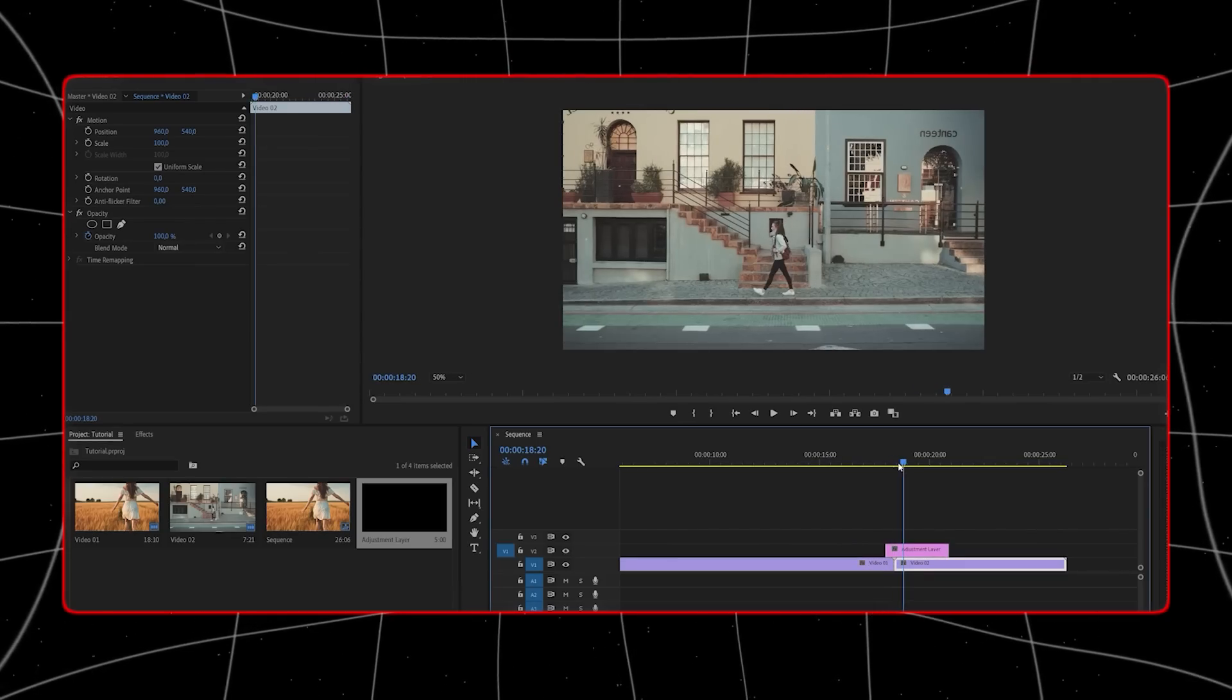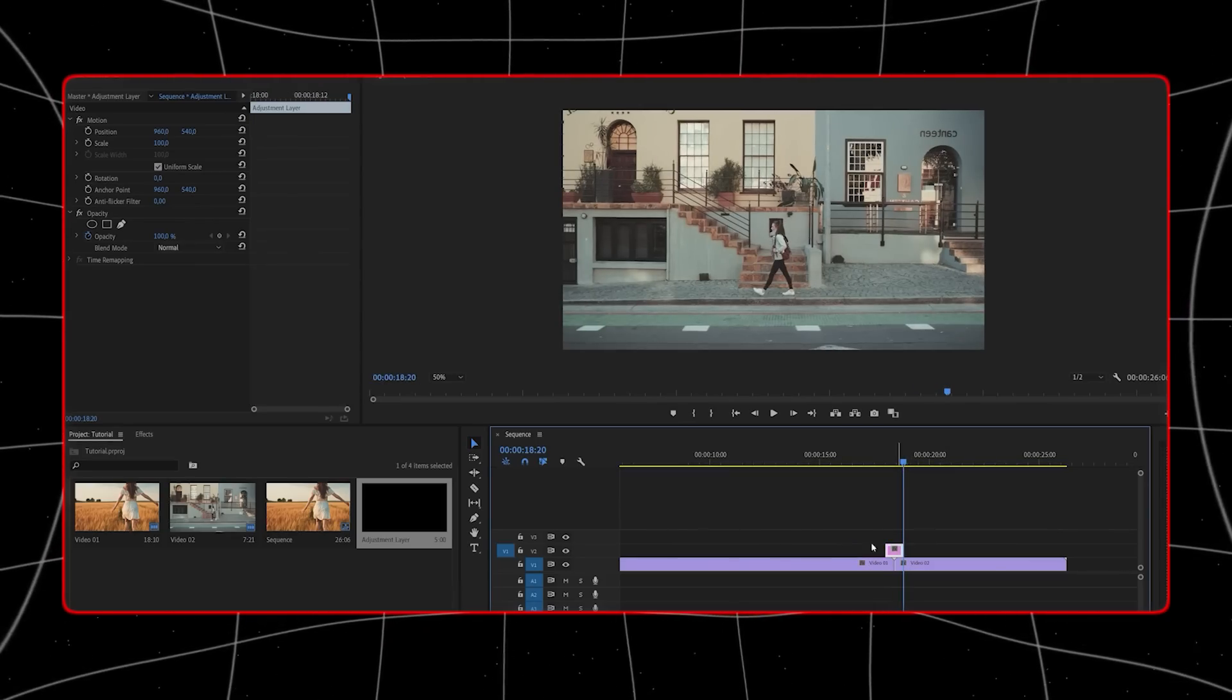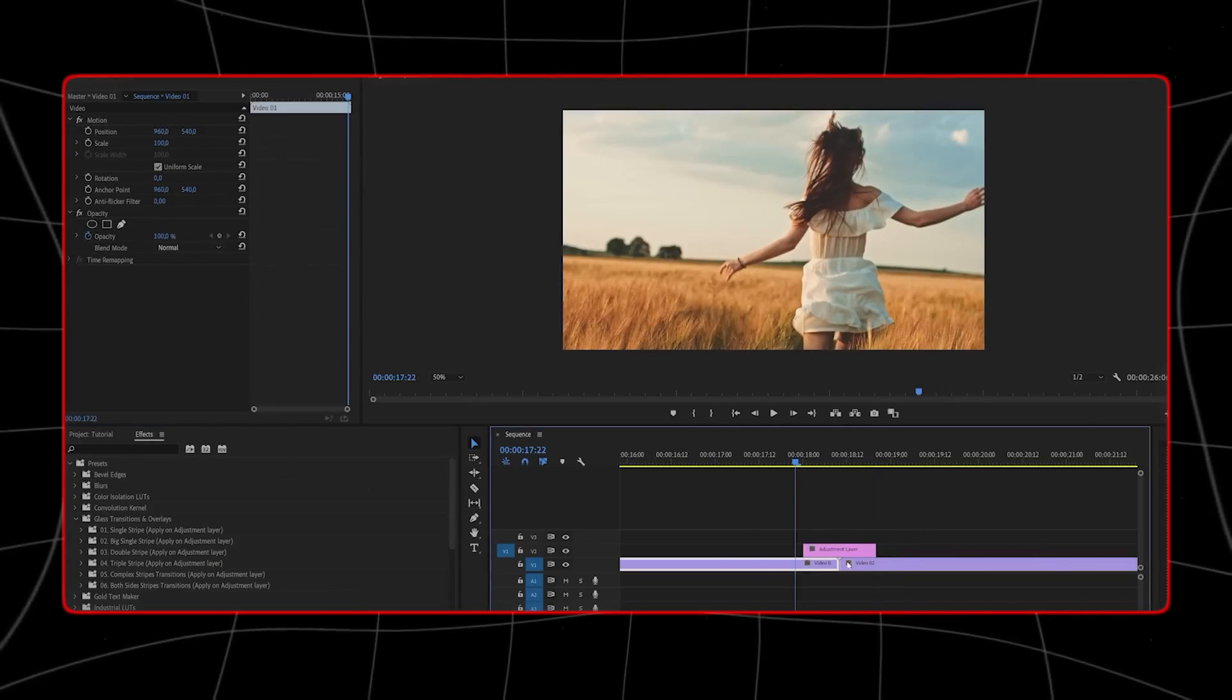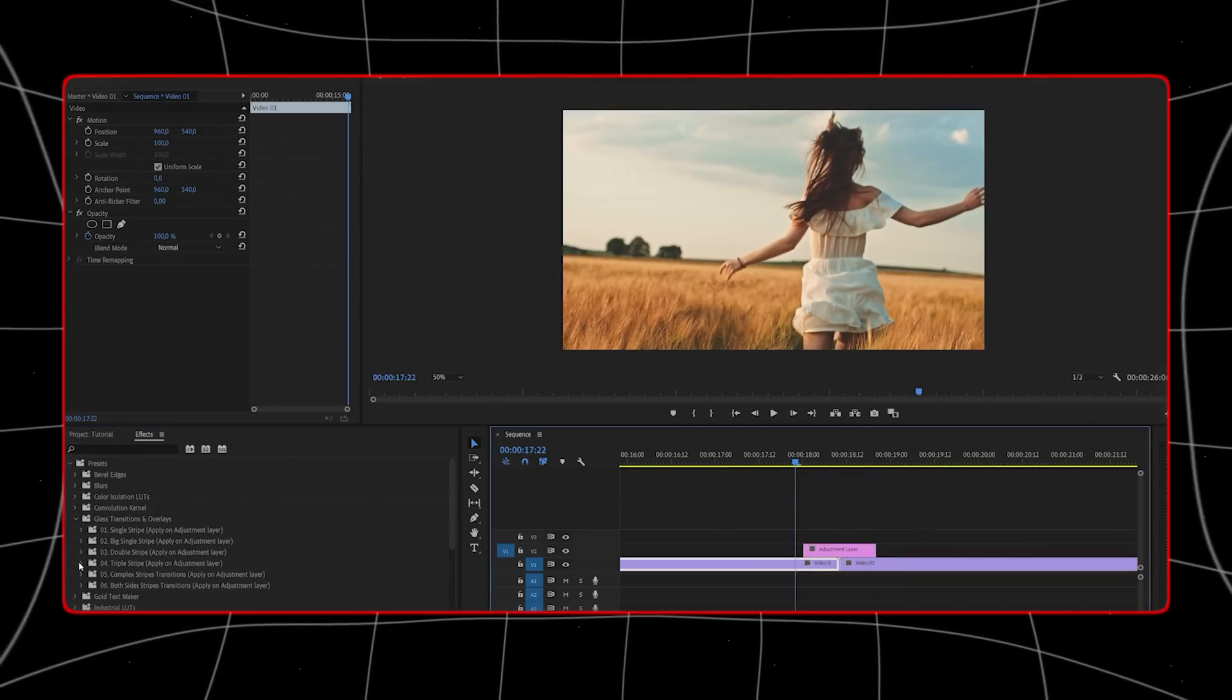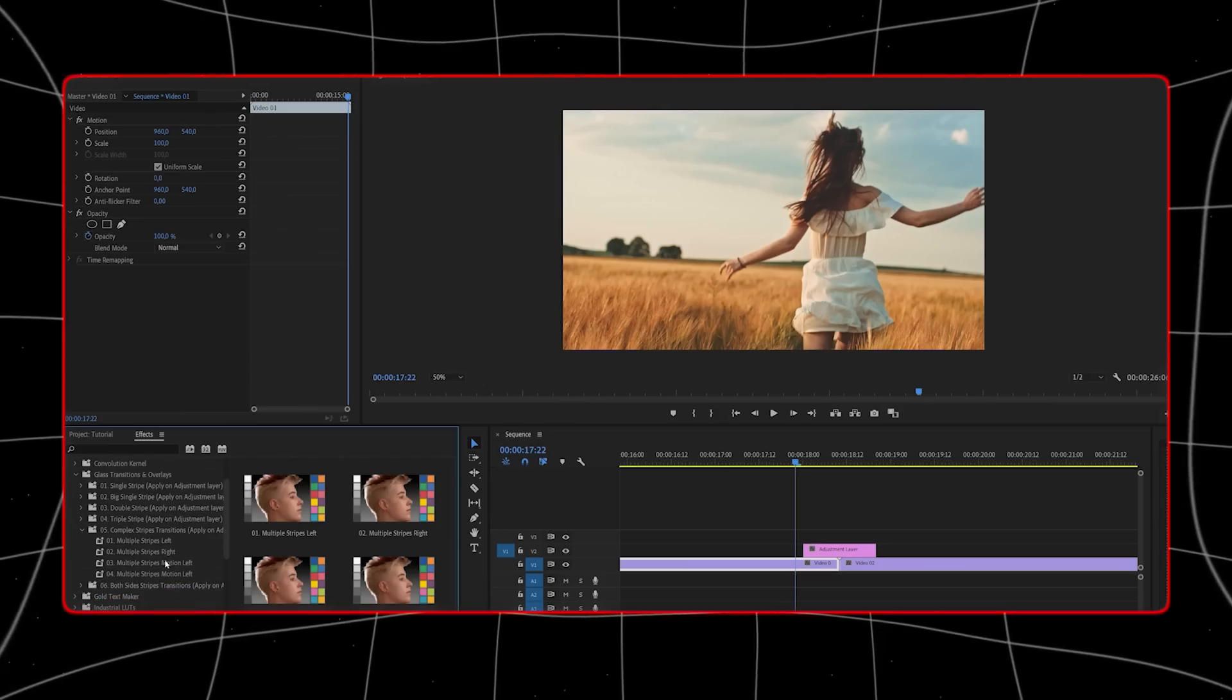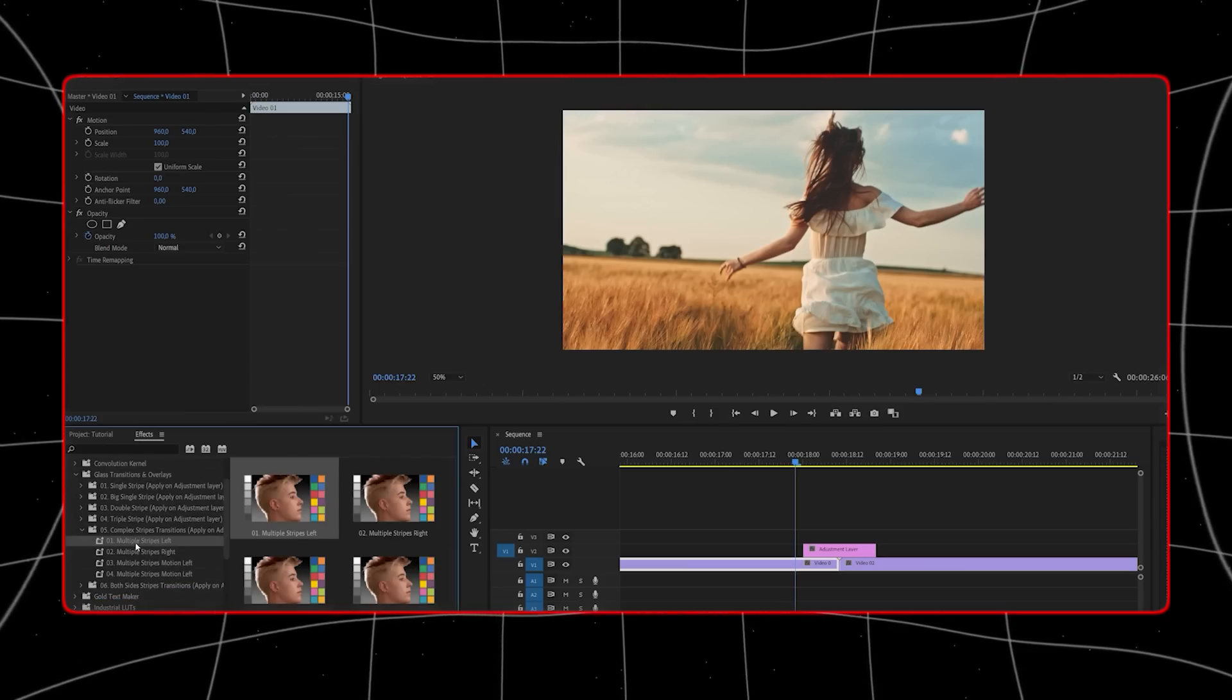With 4M, users could simply give natural language instructions to generate and edit video content. For example, a user might say, create a highlight reel for my vacation videos, focusing on beach scenes and adding upbeat background music.